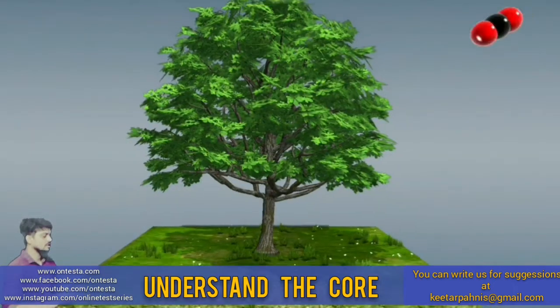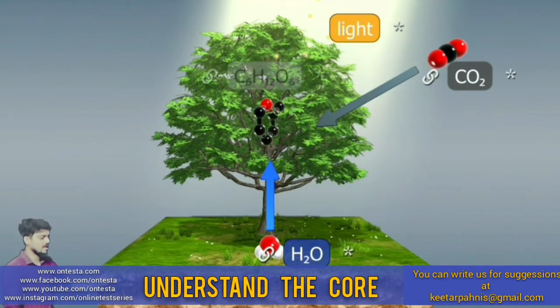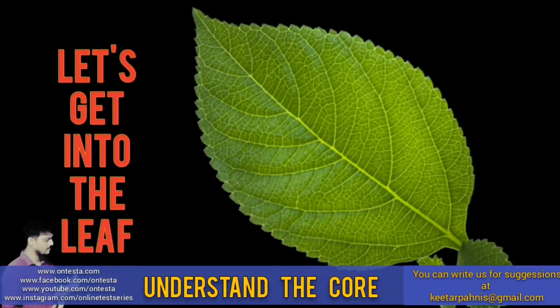CO2 from the environment, water from the soil, and in the presence of light, carbohydrates are synthesized, releasing a by-product O2. Let's get into the leaf.